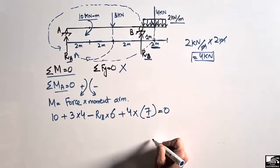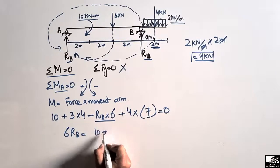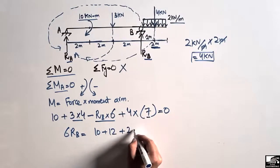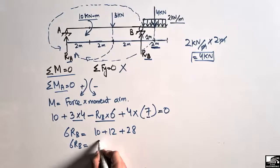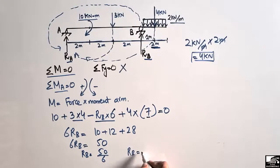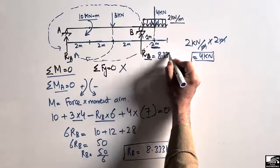Setting the summation of all moments about point A equal to zero and rearranging: 6·RB = 10 + 12 + 28, so 6·RB = 50. Dividing both sides by 6, RB equals 50/6, which gives RB = 8.33 kilonewton.